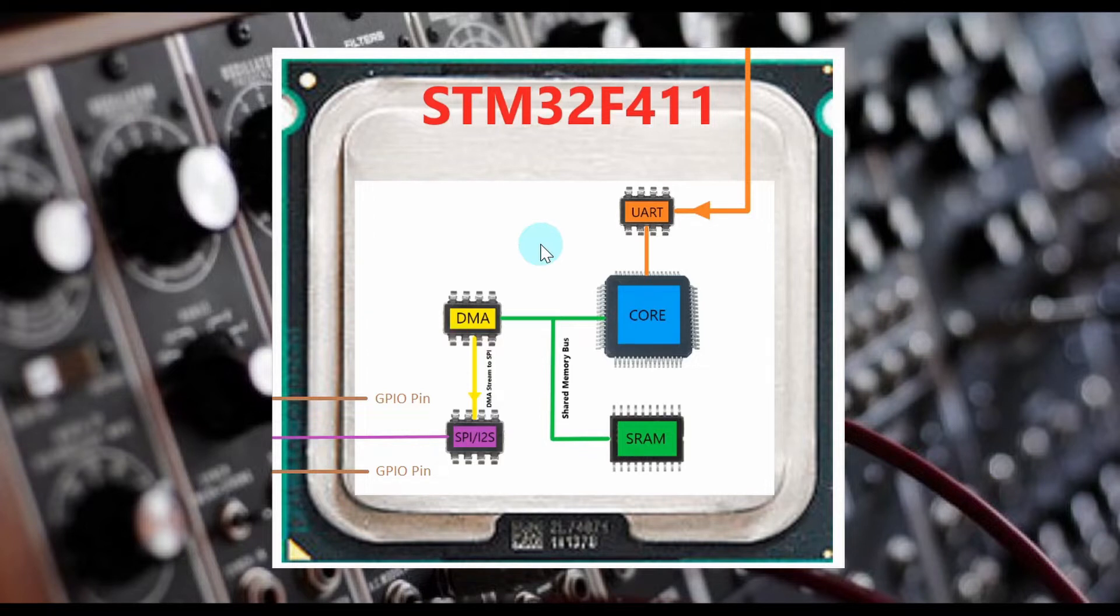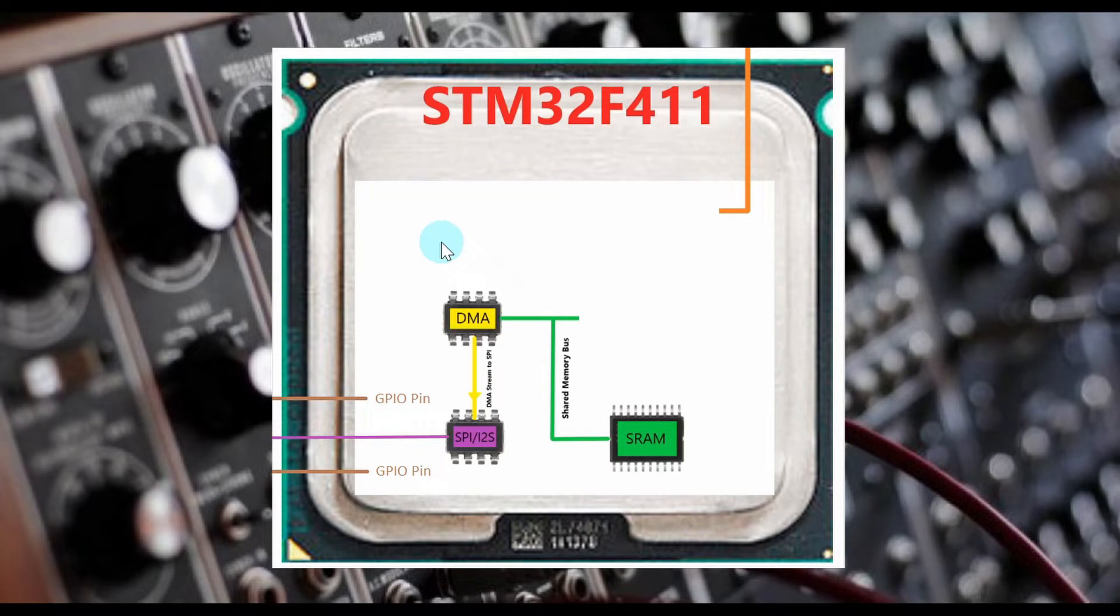They can also be set up to trigger interrupts when they get to a halfway point or at the end of the memory buffer they are accessing. All of these actions can be done entirely without the core constantly instructing it to do so, thus freeing up the core to do other operations while the DMA is doing the menial task of moving data from memory to peripheral.